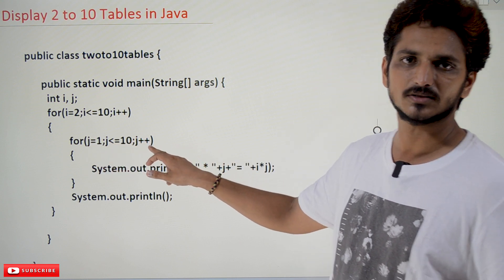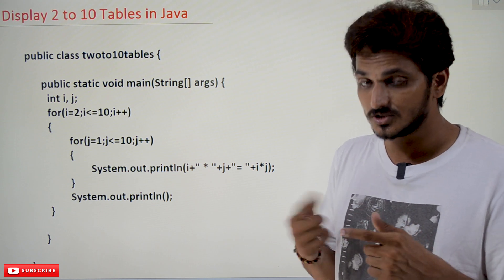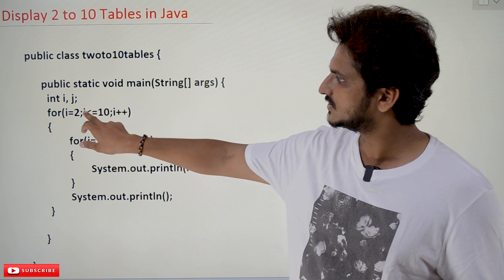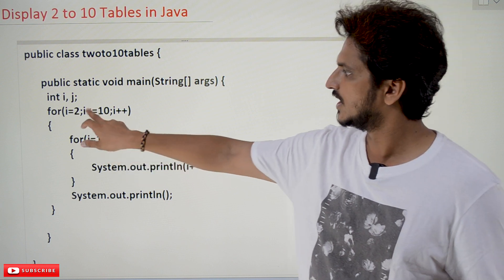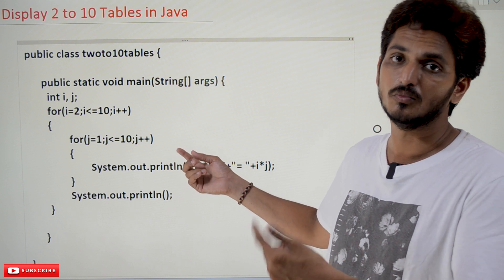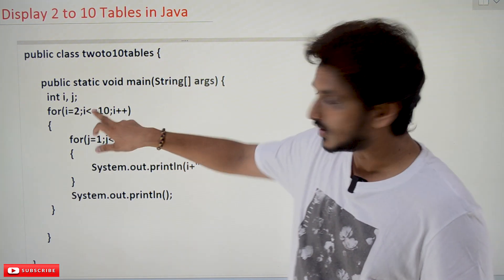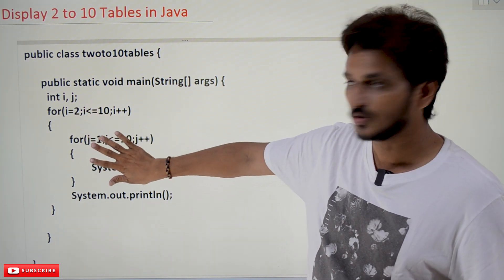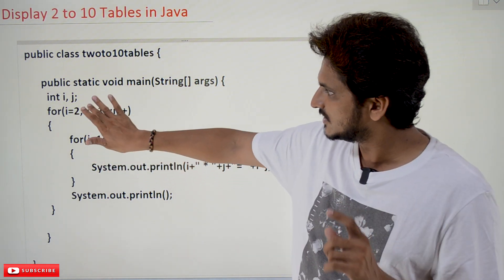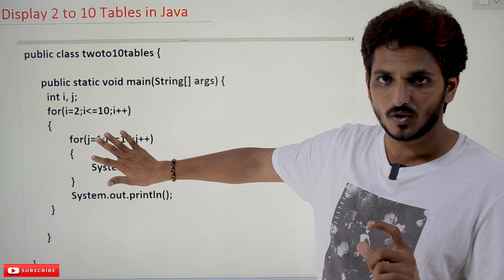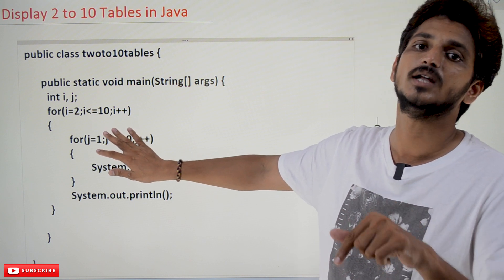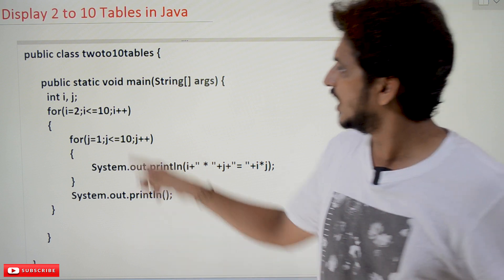How is it going to be executed? When i equals 2, the inner loop executes 10 times; when i equals 3, it executes 10 times again; when i equals 4, 10 times — each time displaying multiples of 2, 3, and 4 respectively. For i equals 2, the inner loop runs 10 times to display the 2 table. For i equals 3, j runs 10 times and since i is now 3, it displays the third table.